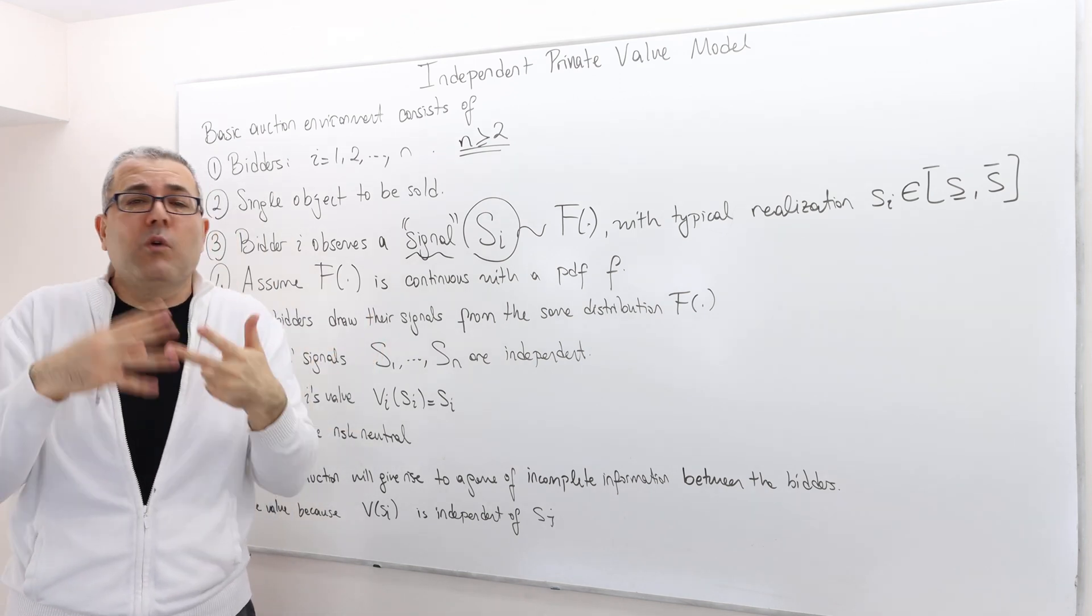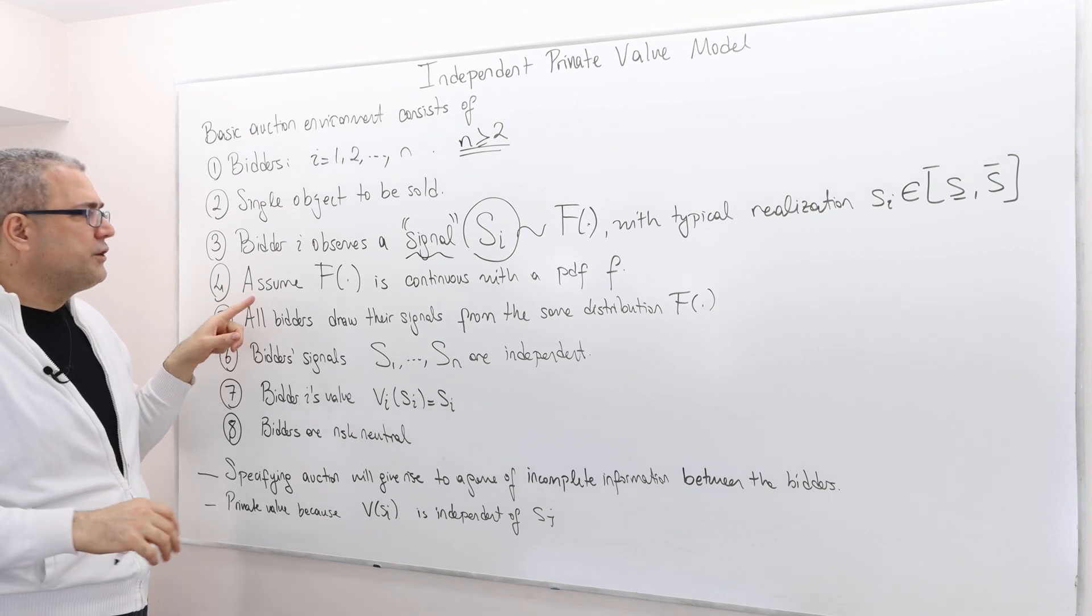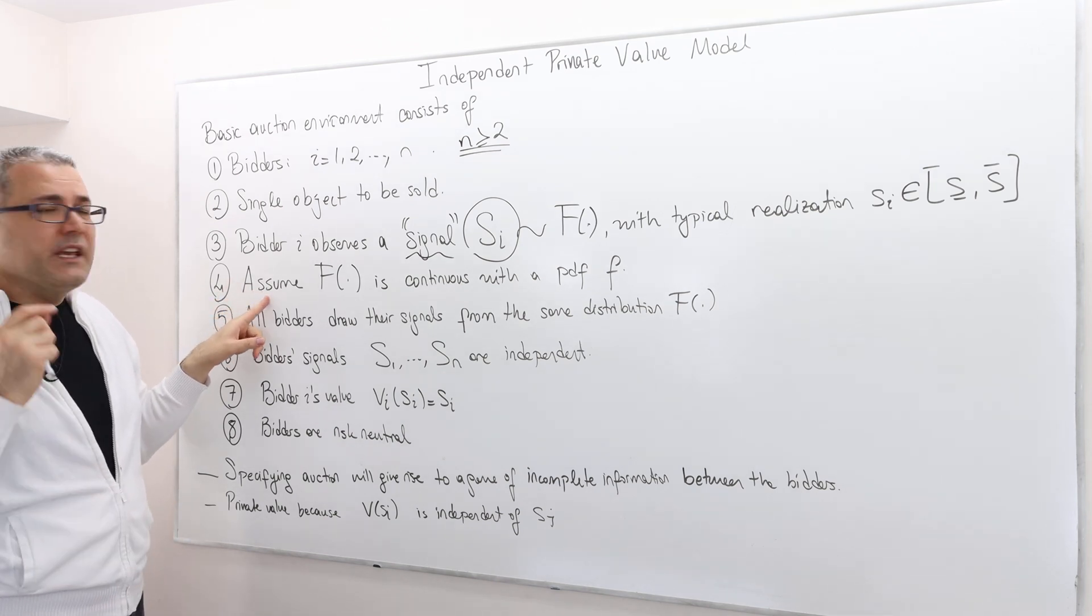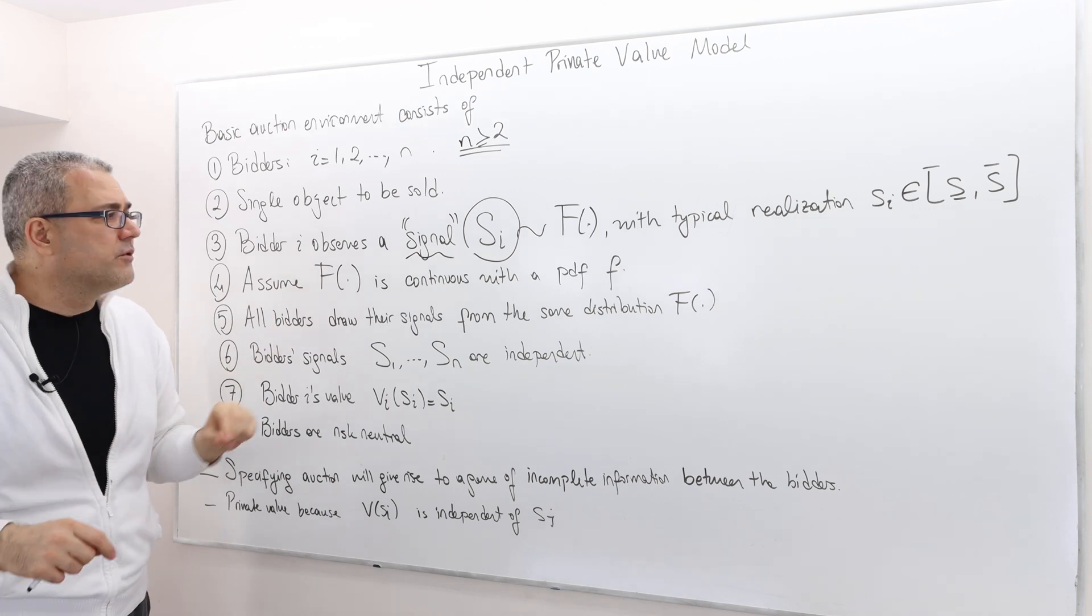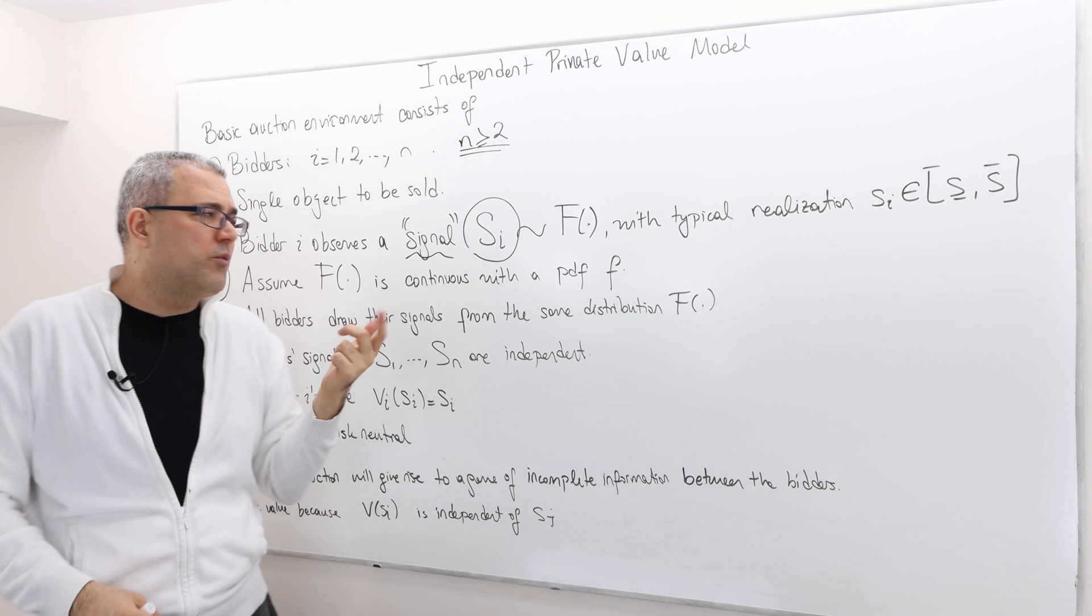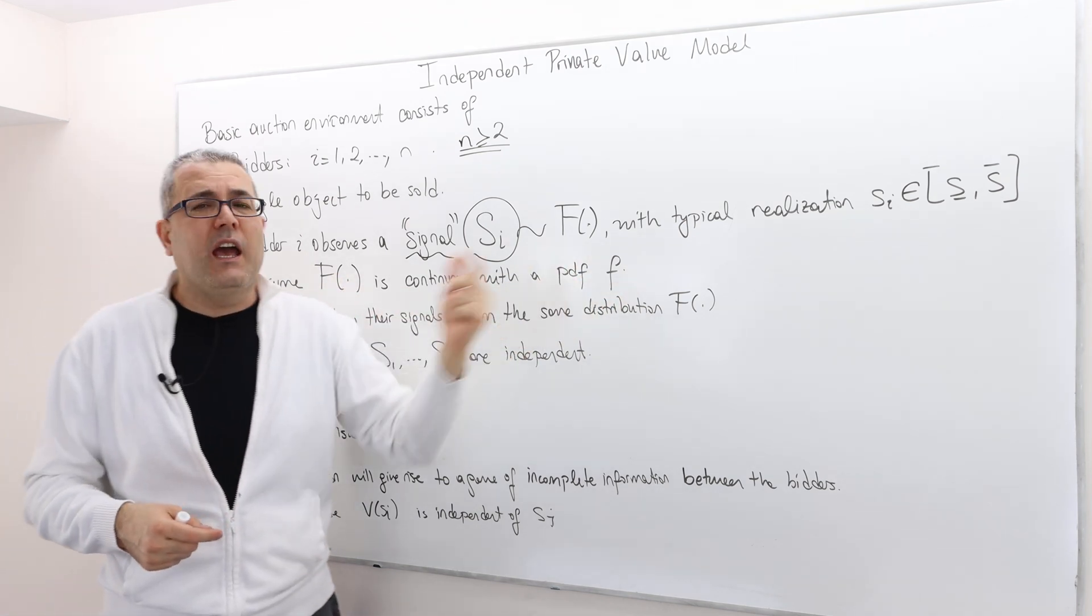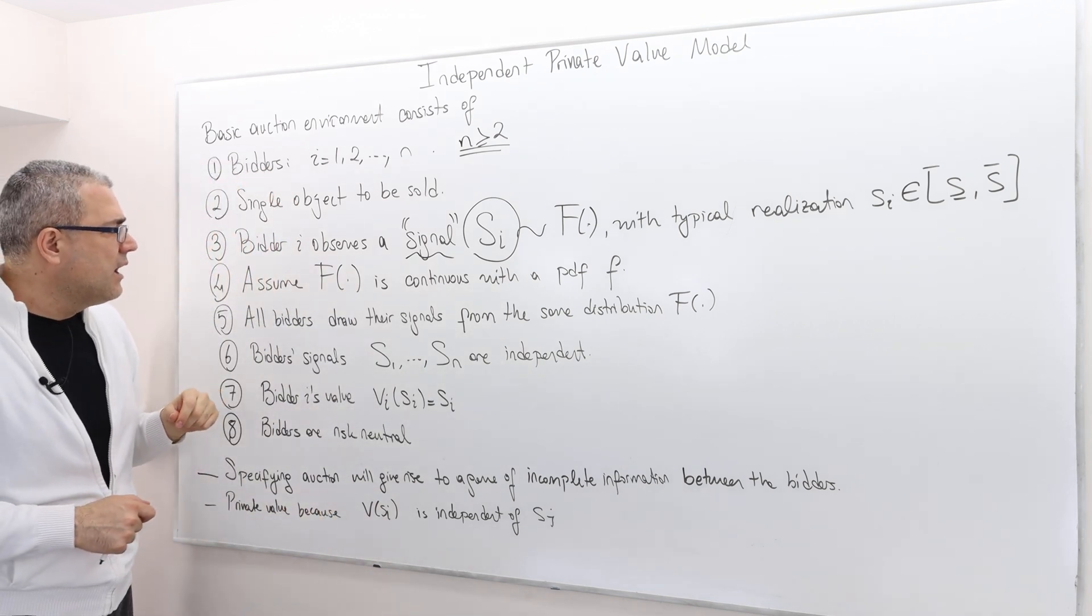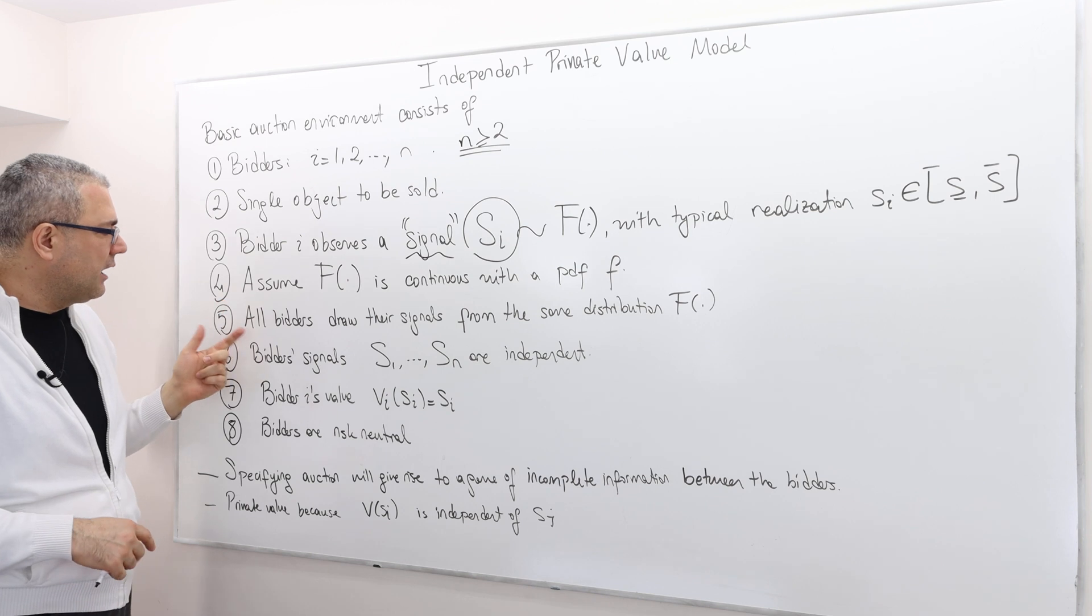We assume that the probability distribution function F is continuous with a probability density function f. So we can take a derivative of this distribution function, in which case we're going to get the PDF f. This is a technical assumption for simplicity. Trust me, it helps a lot.